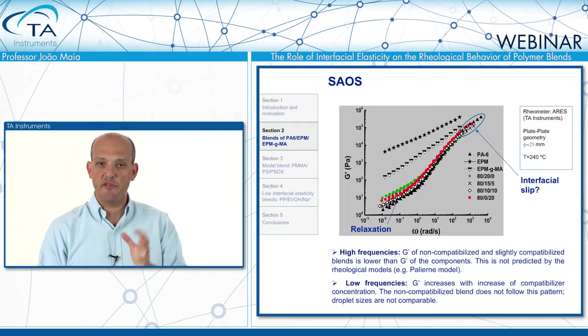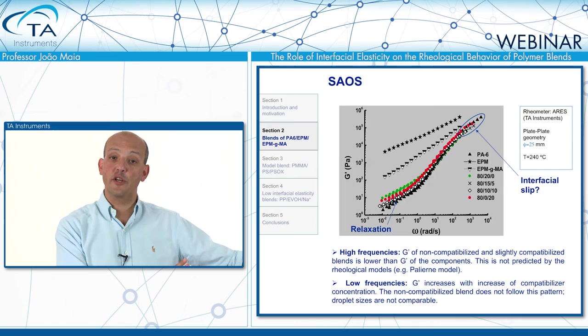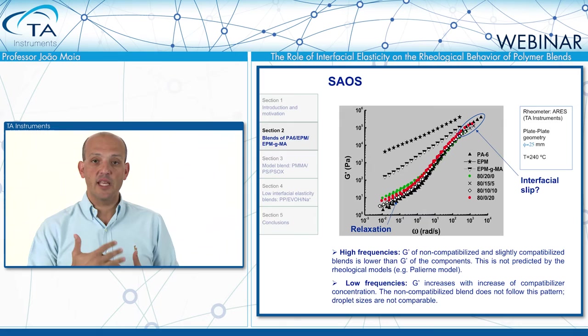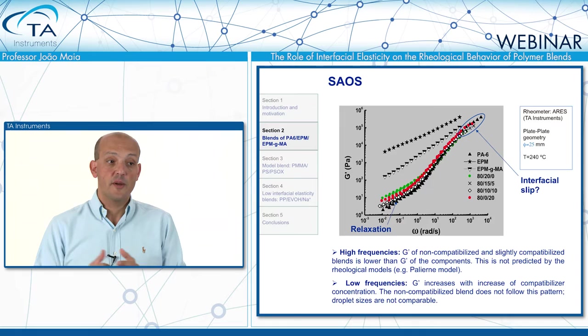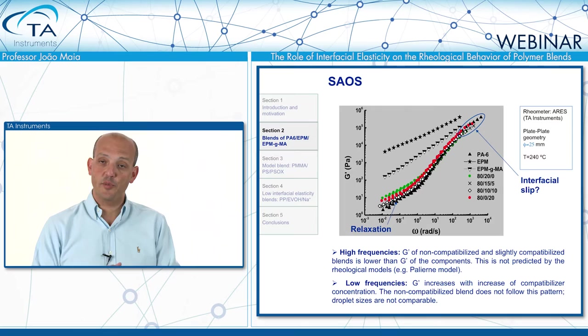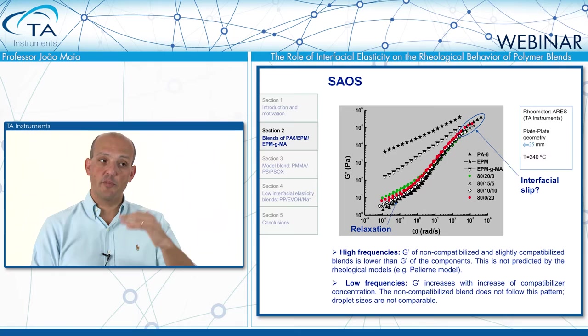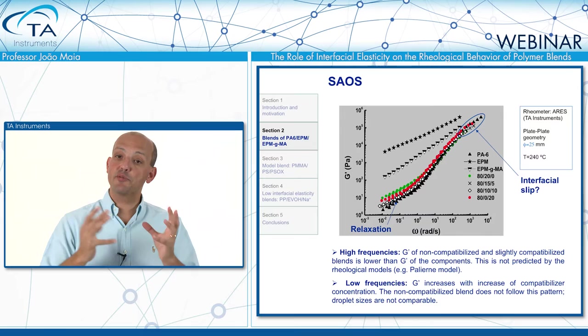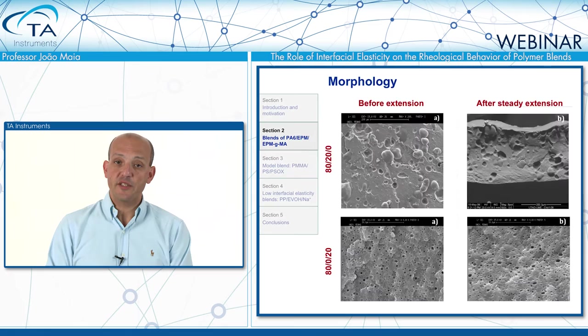The green dots representing the immiscible blend are above the others, but those results are not directly comparable because the actual droplet size is completely different — so we're not comparing apples to apples. This is the first piece of the puzzle.